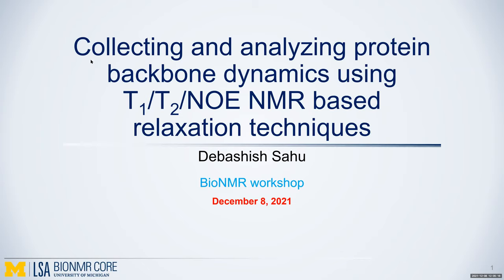Today's BioNMR core workshop is on collecting and analyzing protein backbone dynamics. There are three different experiments one needs to run: T1, T2, and NOE. This is an NMR-based technique, also called a relaxation technique. The idea behind this workshop is to go over the theory of why you're running these experiments, how to successfully set them up on TopSpin, how to set up and analyze the data, get the fitted values, and then do some analysis using model-free analysis.